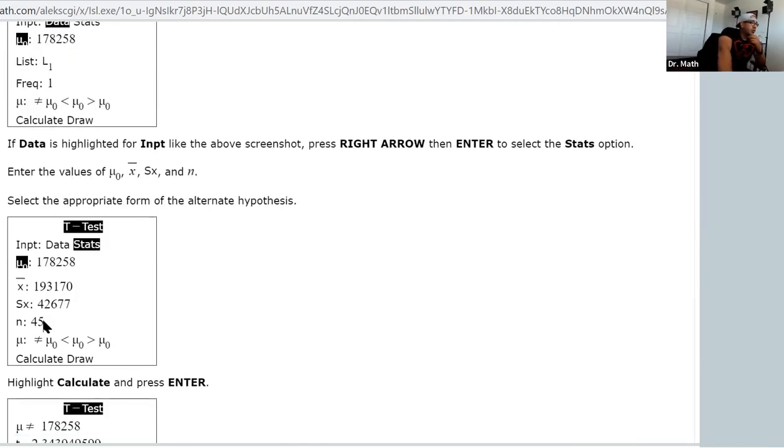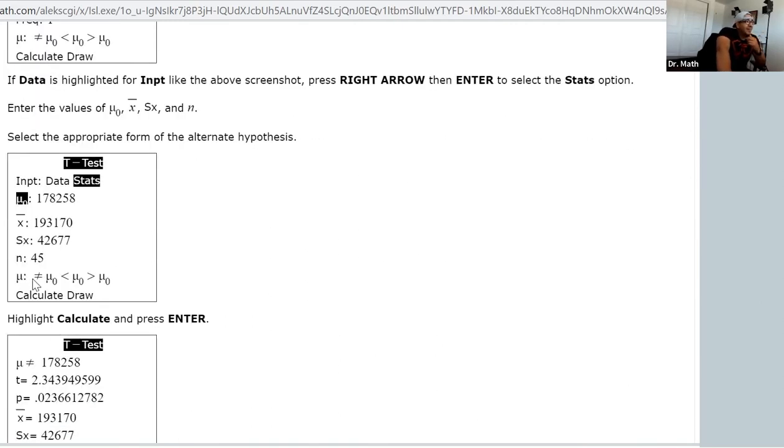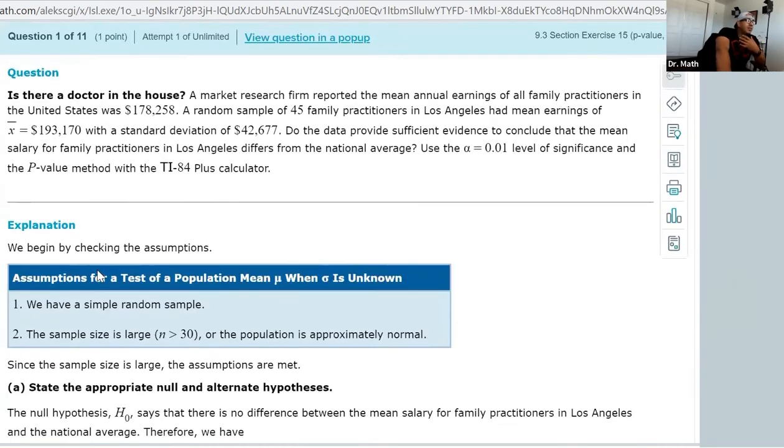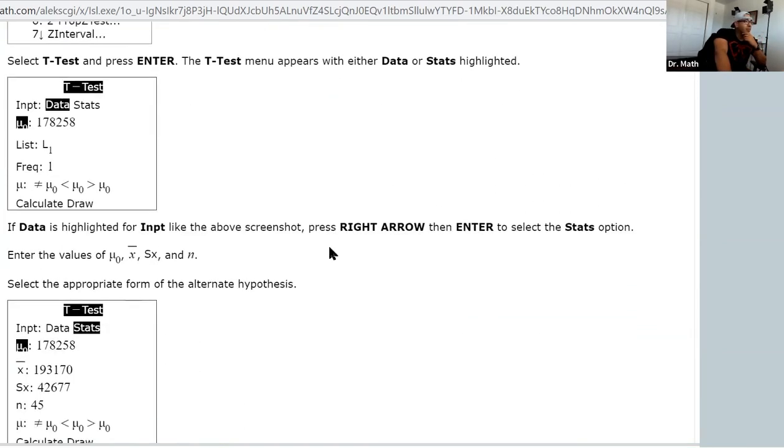We go ahead and plug everything in. Make sure you highlight the not equals to. All I did is I entered in all the information. As you're reading this, make sure you're keeping track - you're underlining, you're highlighting, identifying this is my standard deviation, this is s, this is my x-bar, they give me a sample of 45, that's my n.